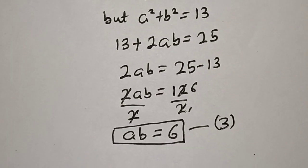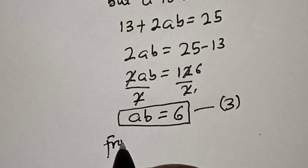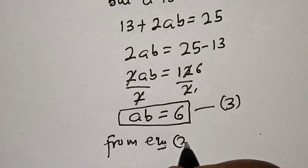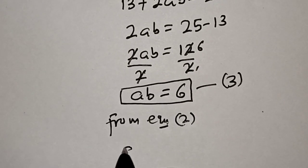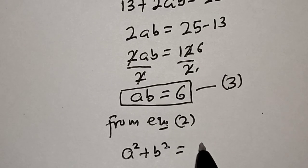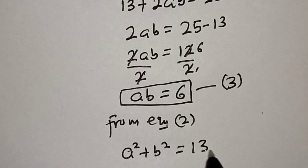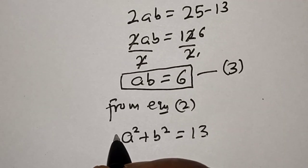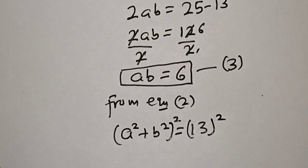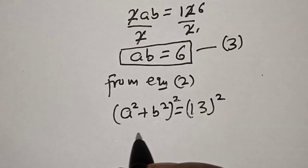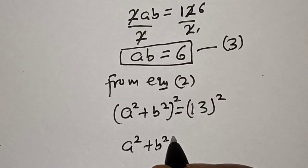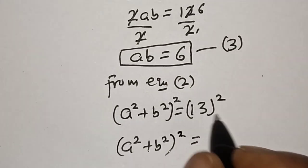Now from equation 2, a squared plus b squared is equal to 13. Let's square both sides: a squared plus b squared, all squared, is equal to 13 squared, which is 169.